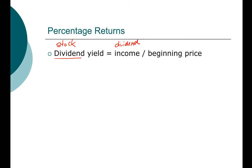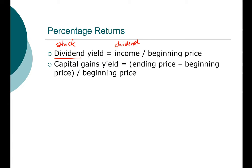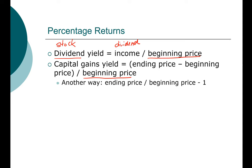The important part is to understand that the dividend yield is the recurring component of your return. The capital gains yield component is computed as the ending price minus the beginning price, divided by the beginning price. There's another way to express capital gains yield — algebraically the same — which is the ending price divided by the beginning price, minus one. This alternative form is easier to enter into Excel as an equation, which you'll see in our assignment.